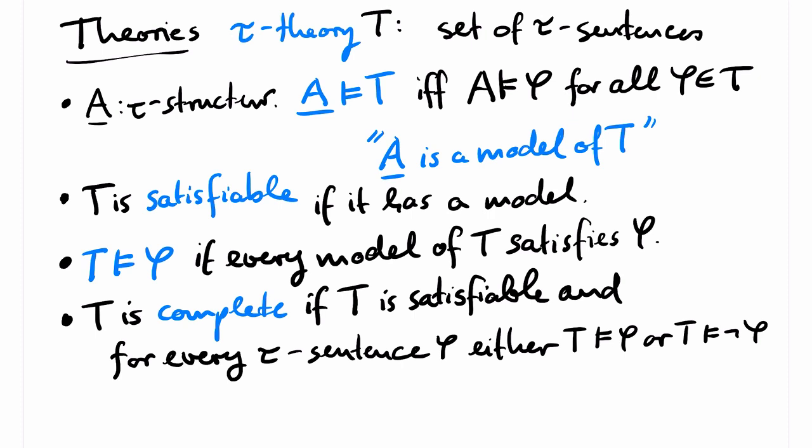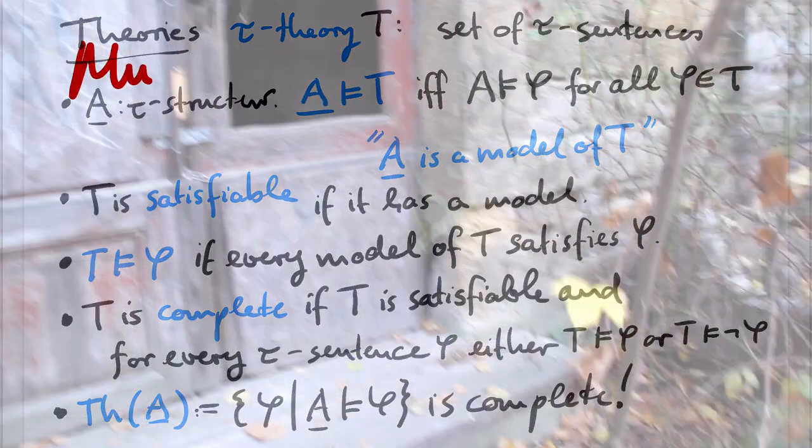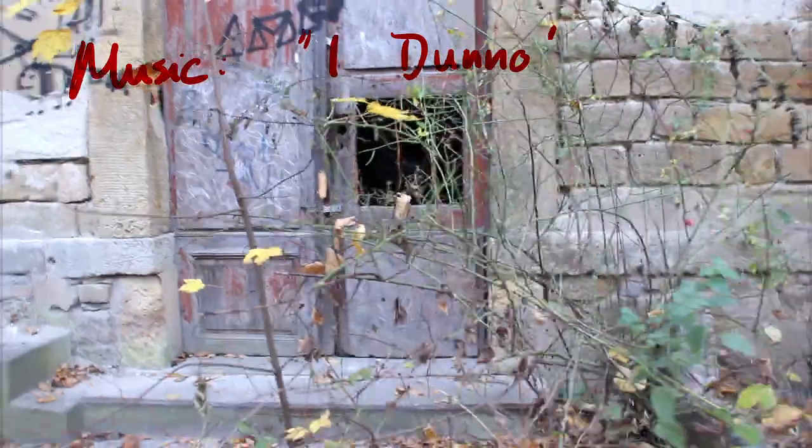Where do complete tau theories come from? Well, one way to produce such theories is that you pick your favorite tau structure A and you take as theory T the set of all tau sentences that hold in A. This will certainly be satisfiable. And every sentence either holds in A or it does not hold in A. So T is complete. Thanks for listening.